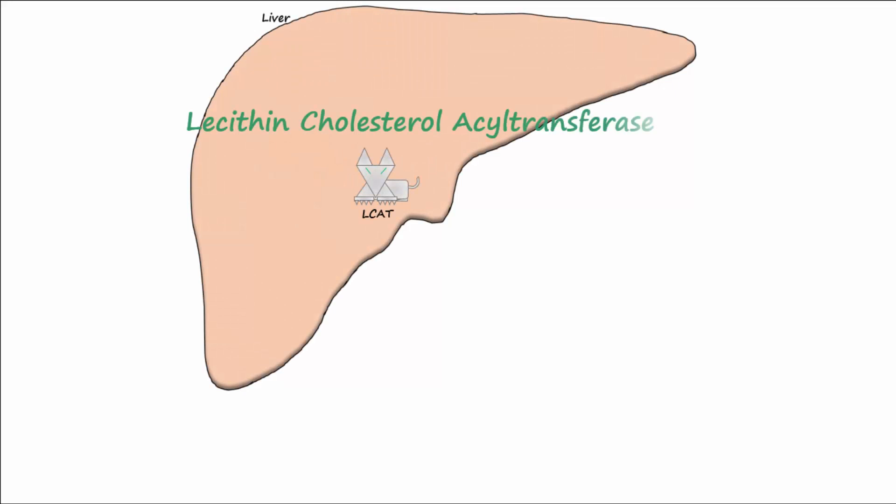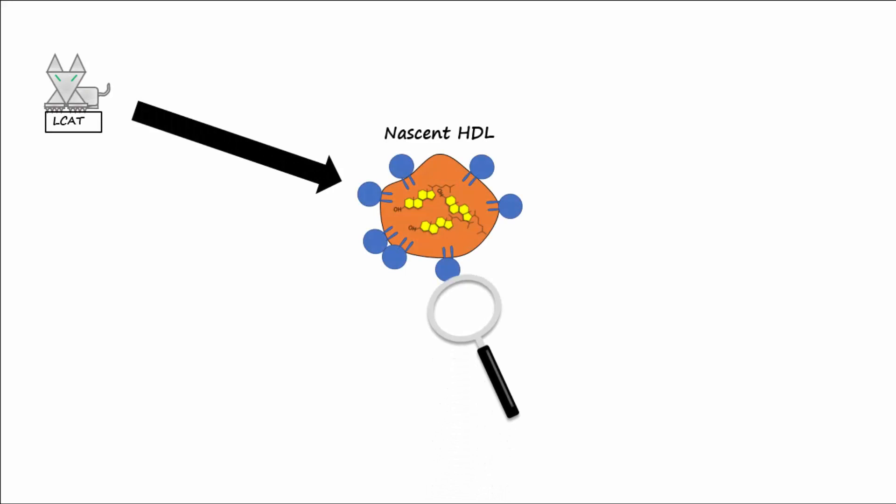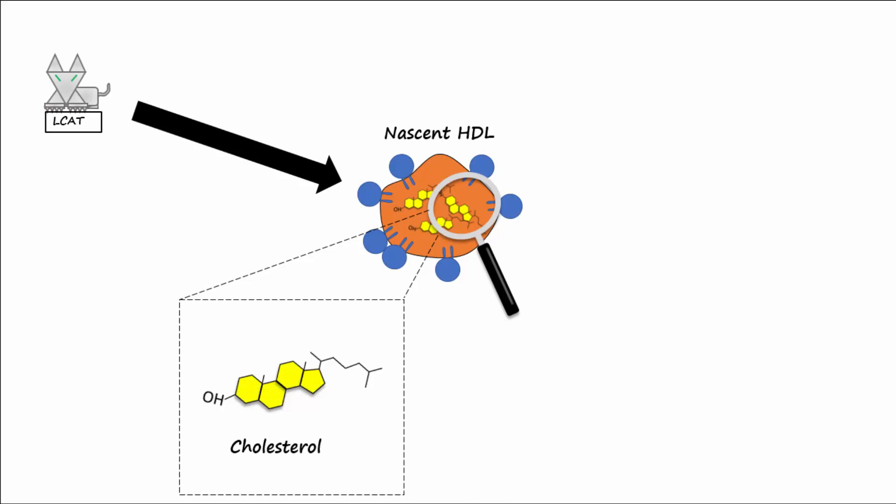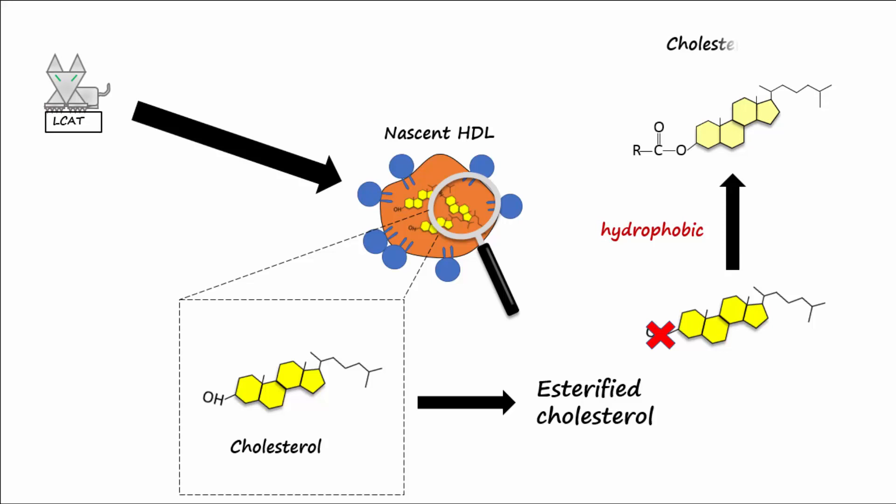LCAT or lecithin cholesterol acyltransferase is an enzyme produced by the liver and is located in the plasma. LCAT acts on free cholesterol in the nascent HDL and converts it into esterified cholesterol. This action removes exposed hydroxyl groups to make a more hydrophobic form of cholesterol called a cholesterol ester.